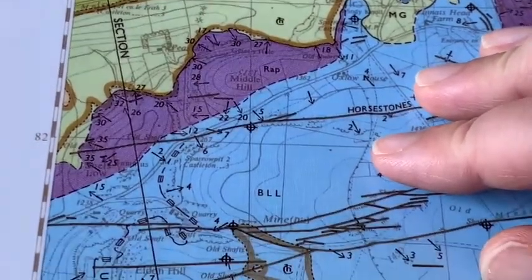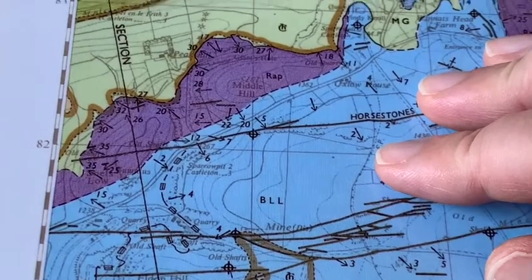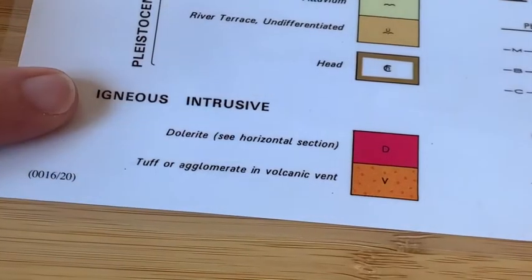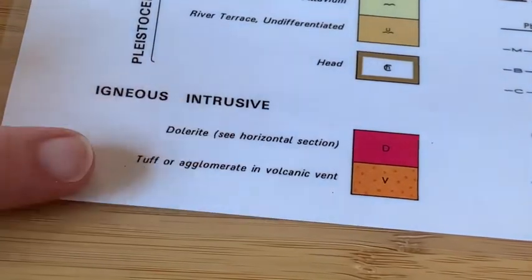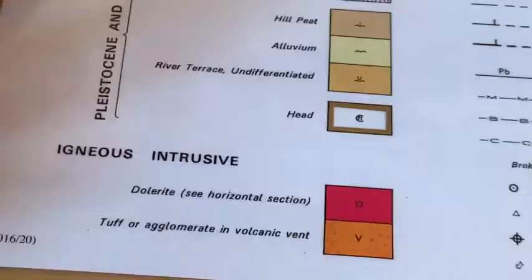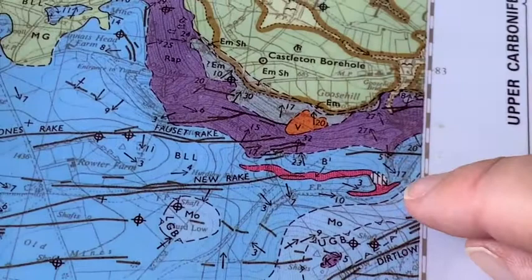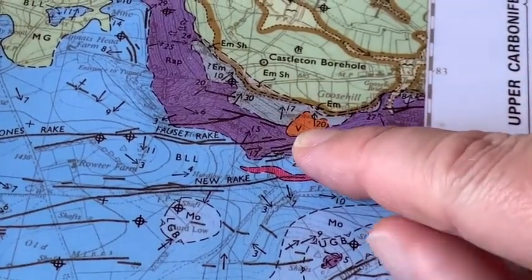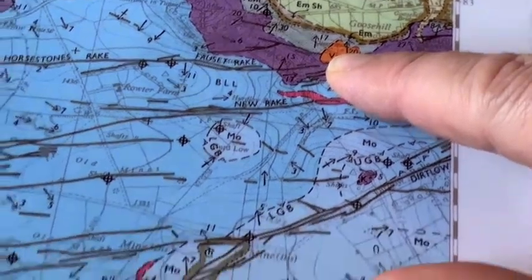Igneous rocks can also be found on geological maps. They aren't recorded in the general vertical column but are recorded elsewhere in the key. The dark pink and orange colours represent igneous rocks. Looking at the map, we've got a lava flow here, a volcanic vent here, and then possibly a sill in this area.